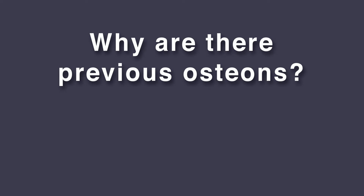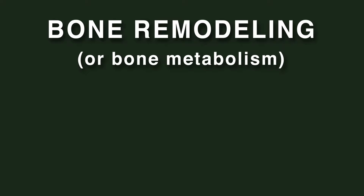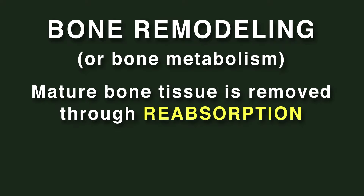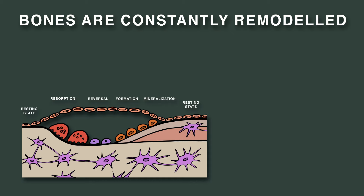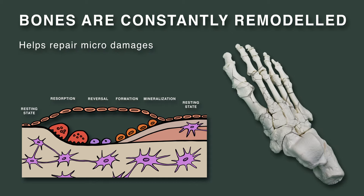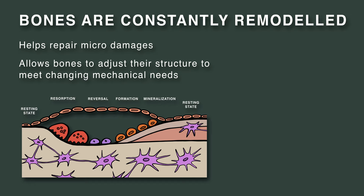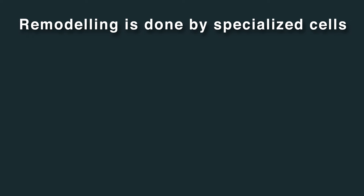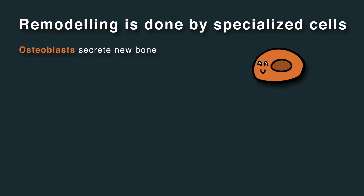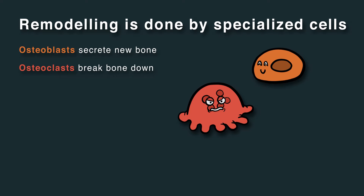Why are there previous osteons? This is due to bone remodeling, or bone metabolism, which is a process in which mature bone tissue is removed through reabsorption, and new bone tissue is added through ossification. Bones are constantly remodeled because this helps repair micro-damages and allows bones to adjust their structure to meet changing mechanical needs. This remodeling is done by specialized cells: osteoblasts secrete new bone, while osteoclasts break bone down.